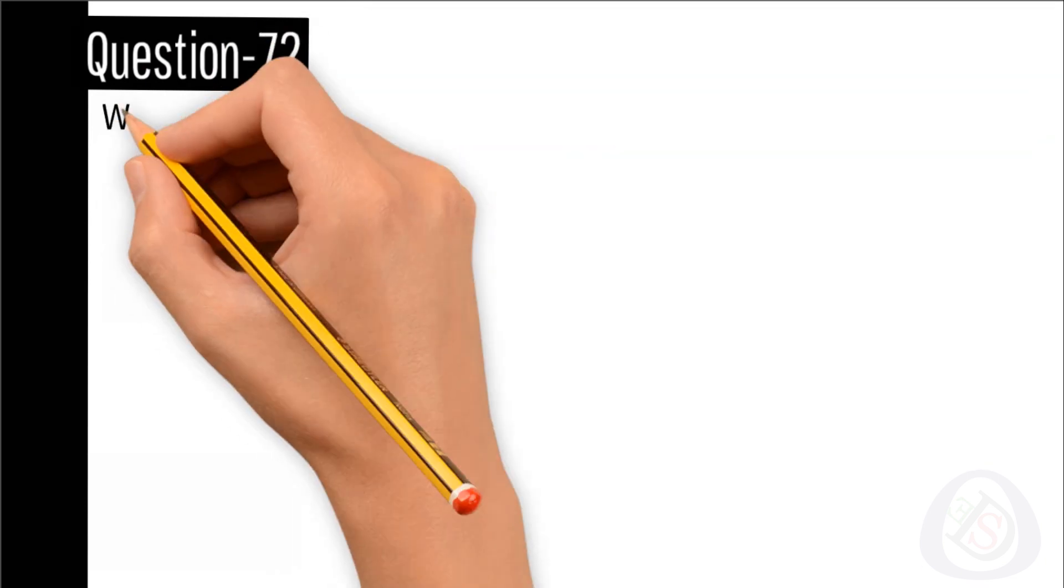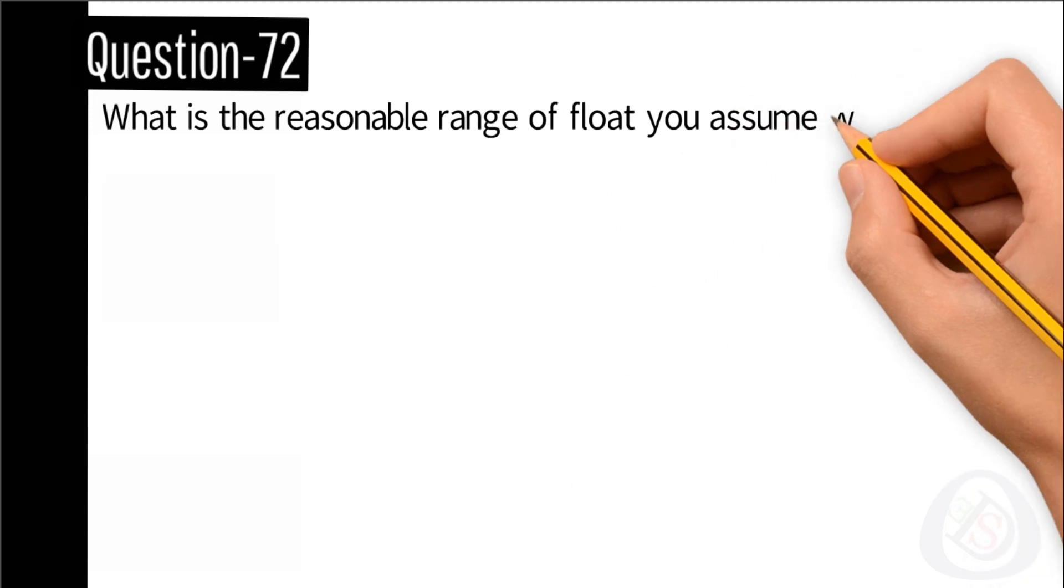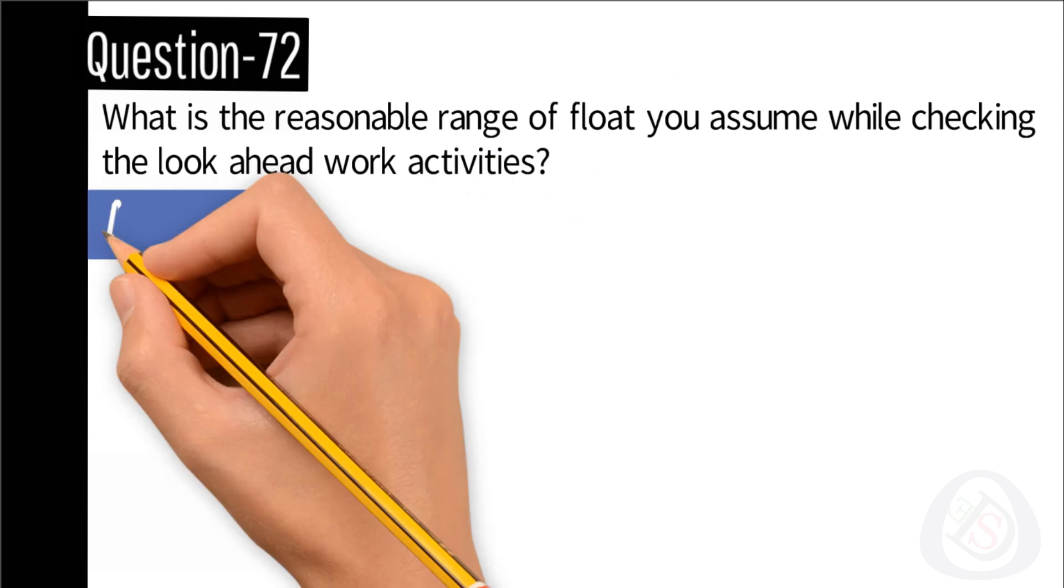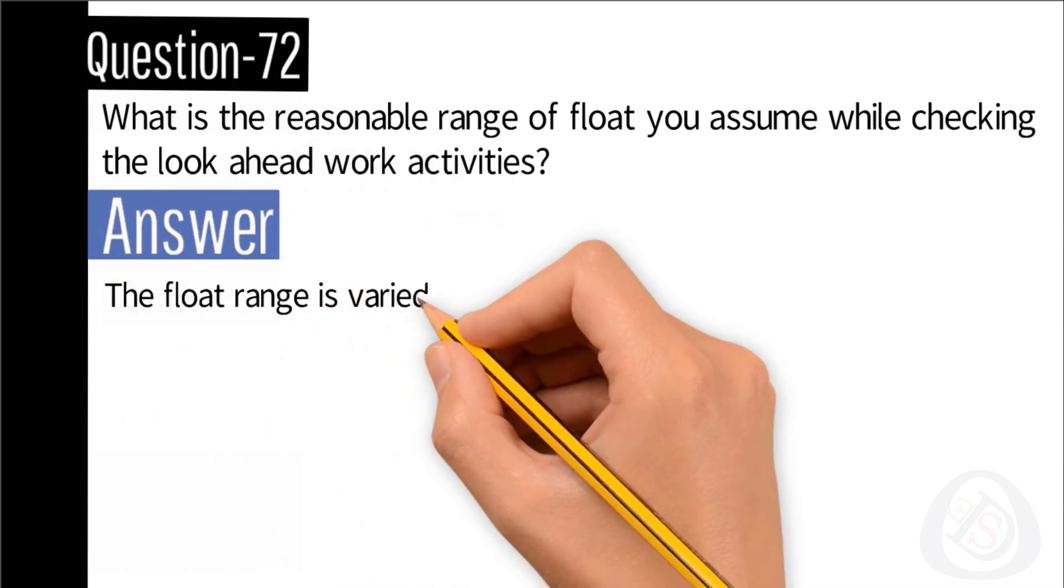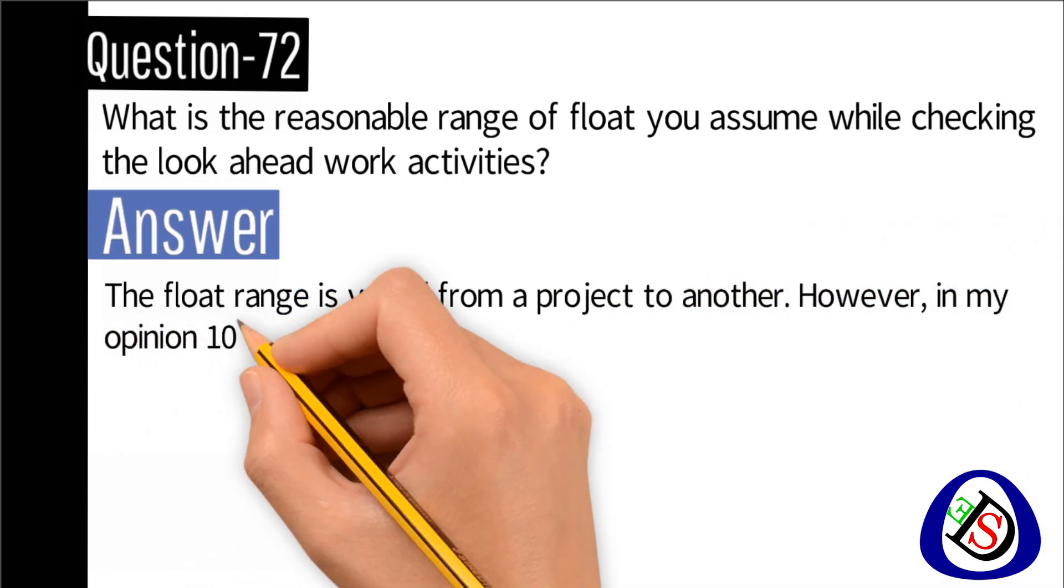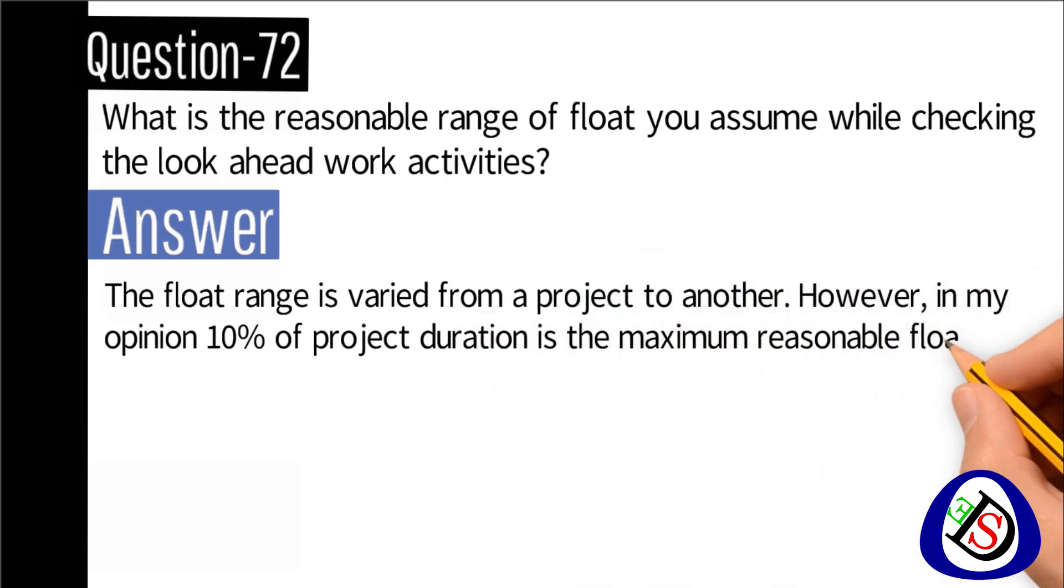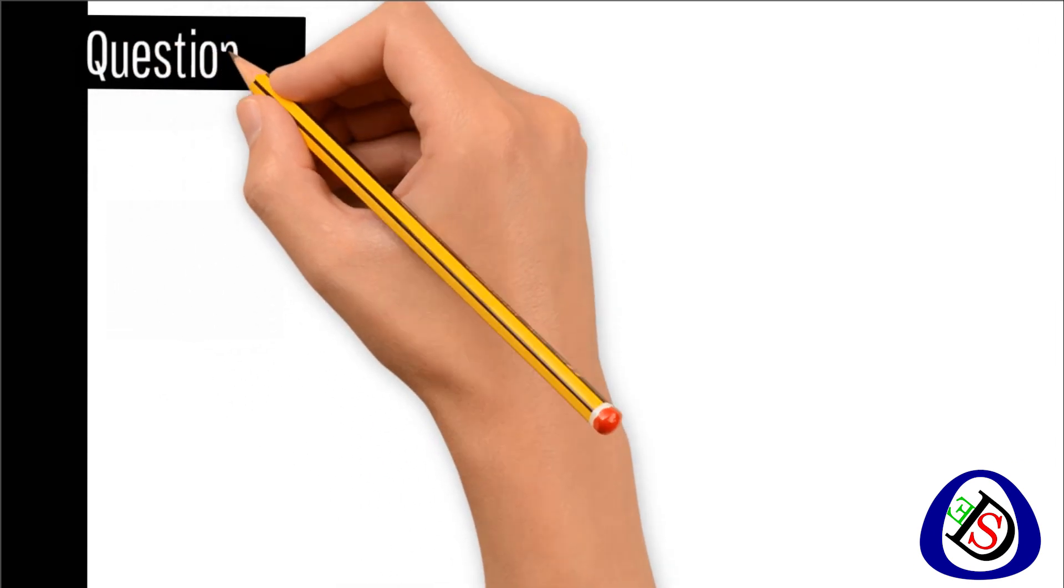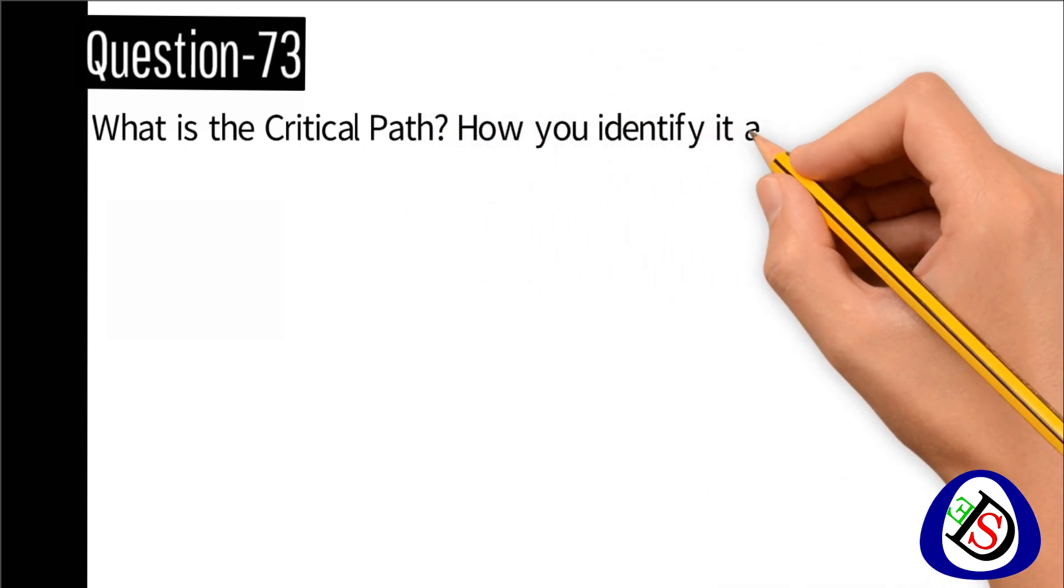Question number 72: What is the reasonable range of float you assume while checking the look-ahead work activities? Answer: The float range is varied from a project to another. However, in my opinion, 10 percent of project duration is a minimum reasonable float for any project.